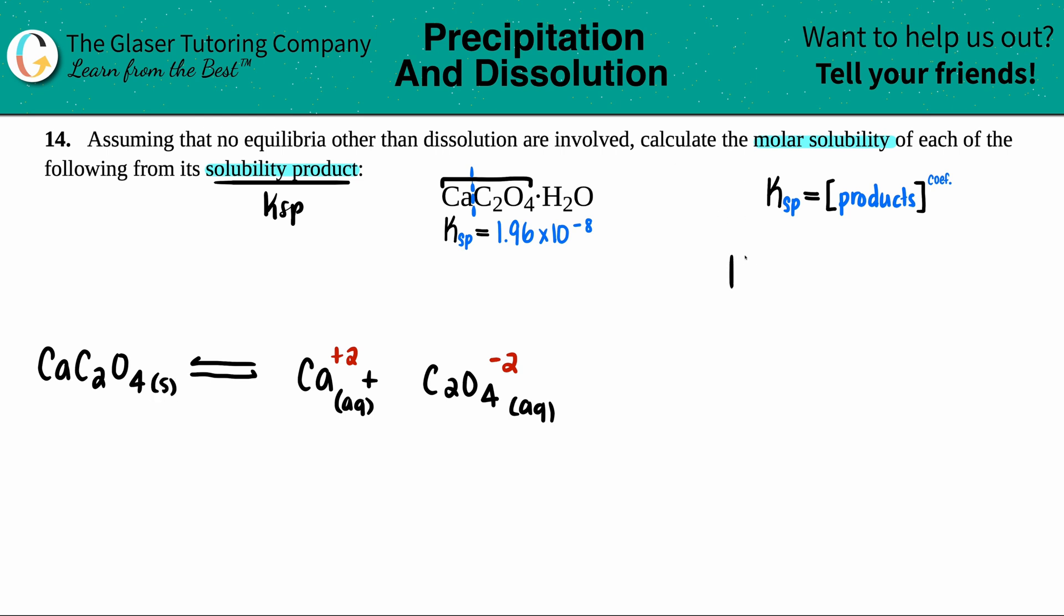So here I have Ksp equal to Ca2+ times the C2O42-. And just double check on those coefficients because you do have to always raise them to the coefficients, the big numbers in the front. But since for both of these, there was only one of each,